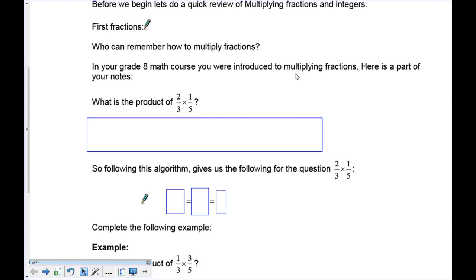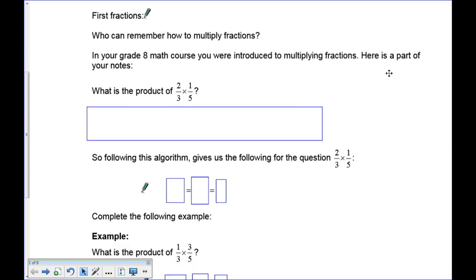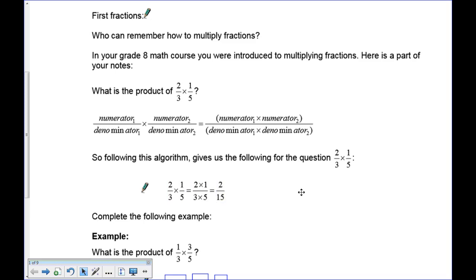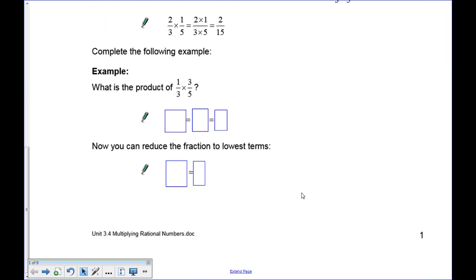In grade 8 math you were introduced to multiplying fractions. Here's part of your notes: to multiply a fraction you take the numerator — the top number — and multiply it by the numerator of the second fraction. On the bottom you take the denominator and multiply it by the other denominator. So for this question we have 2 times 1 on top and 3 times 5 on the bottom, which gives you 2 over 15.